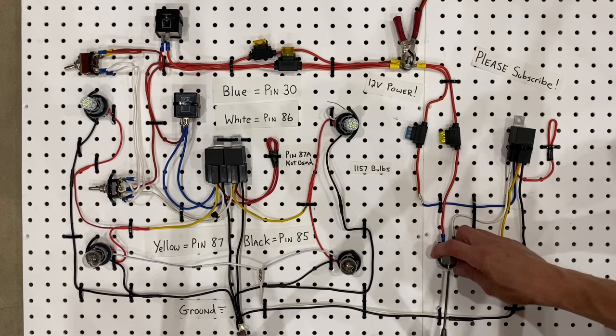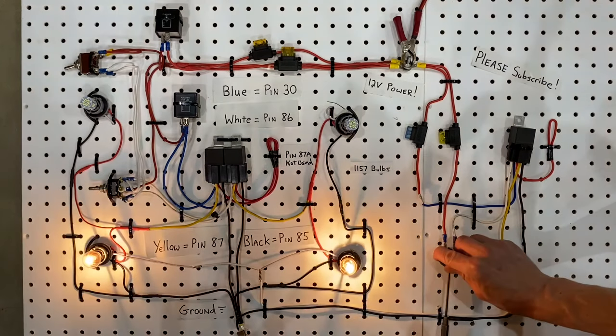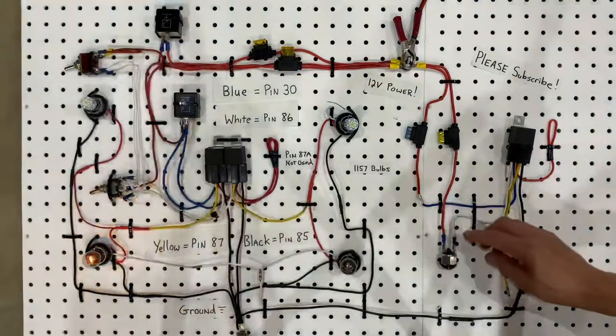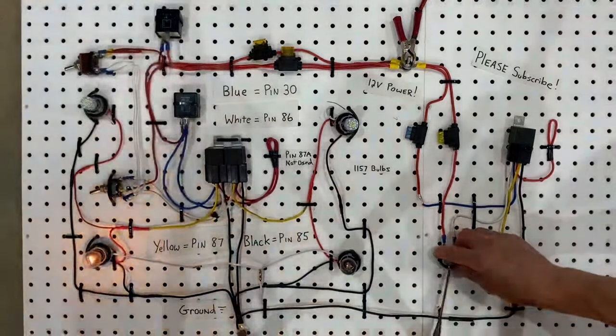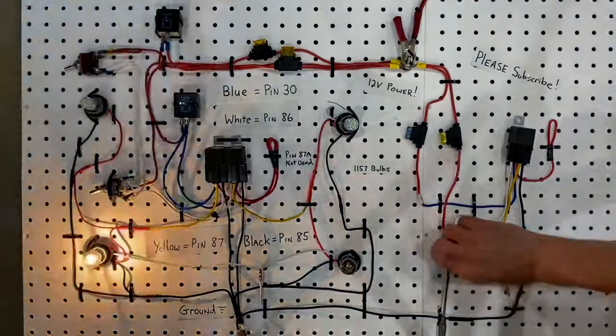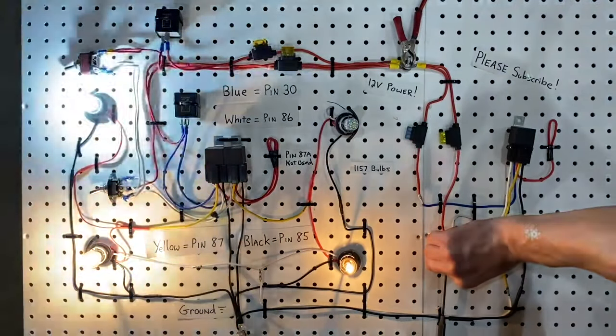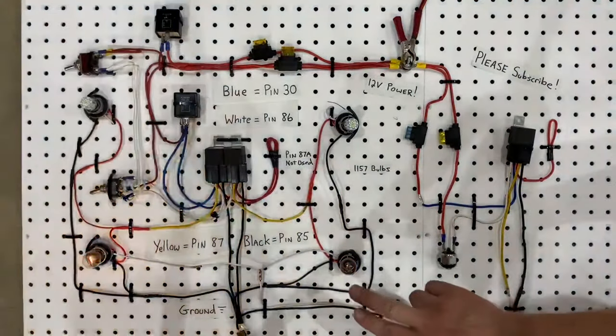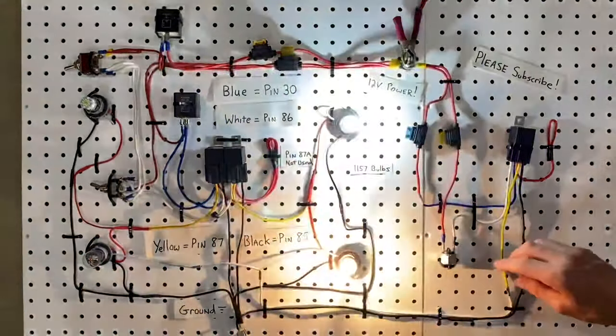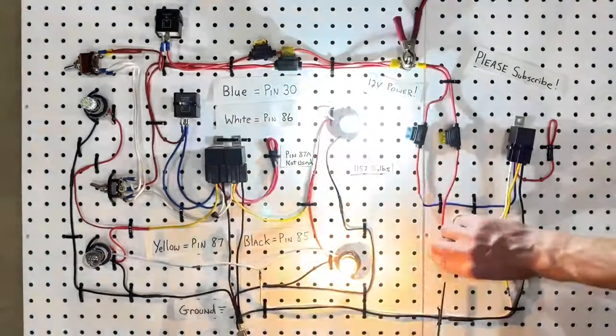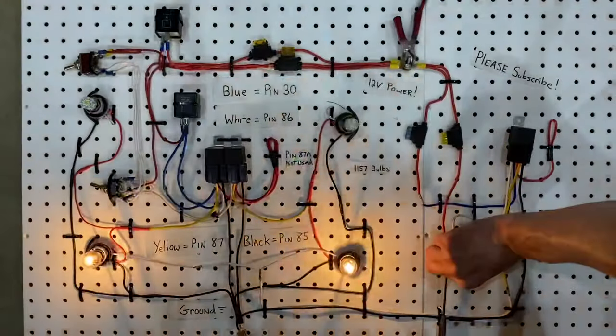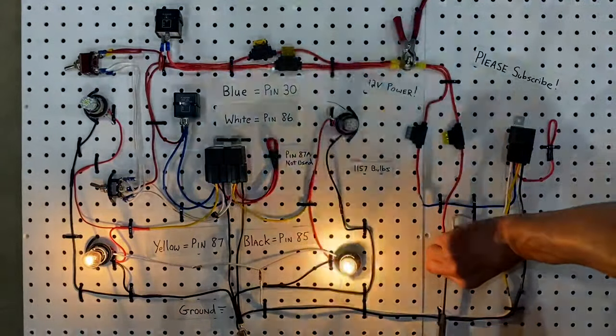All right, let's see what the brakes look like now. All right, we got brakes. Now let's try a turn signal. You can see how it's a dual filament bulb and both filaments are now working, so we got one filament going, then we get the other one lit up with the brakes. Pretty cool.